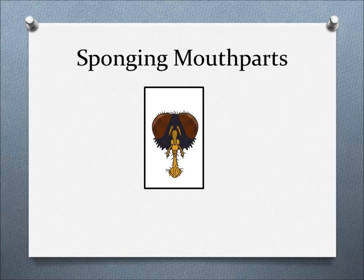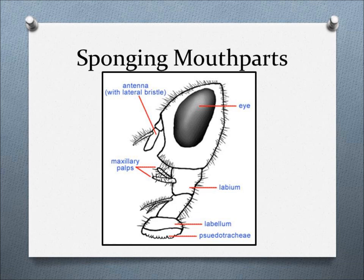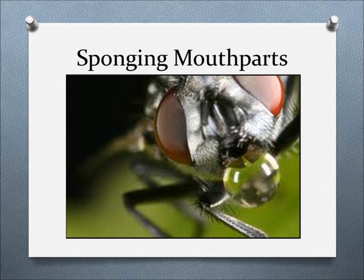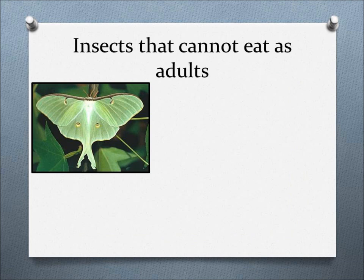The last type of mouthparts are the sponging mouthparts. Most flies have this type of mouthpart, and they use a fleshy labium on the proboscis that acts like a sponge, which then sucks up the liquid and food particles that these insects eat. For insects with sponging mouthparts, if they come in contact with liquid food, they can just slurp it up. But if they come across solid food, the insect will regurgitate a salivary secretion that liquefies the food, and the insect can then slurp up the food and be fed.